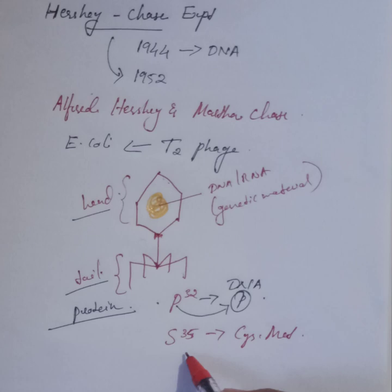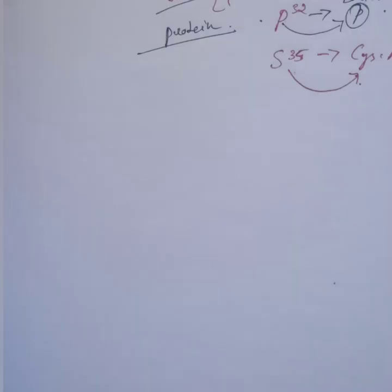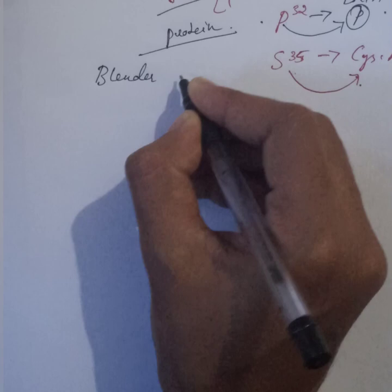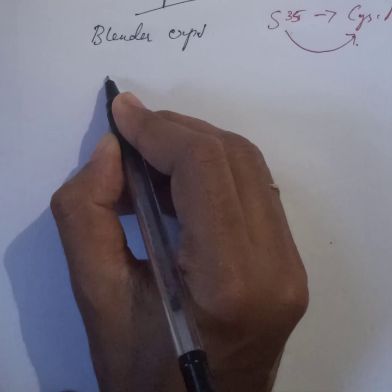By using these isotopes we can understand where the DNA and protein particles are transferred or moved during reproduction. This experiment is also called the blender experiment, since after the formation of progenies there is an agitation and centrifugation process which we will discuss later. First of all, let us see the reproduction process of T2 phage in E. coli host cells with the P32 isotope.